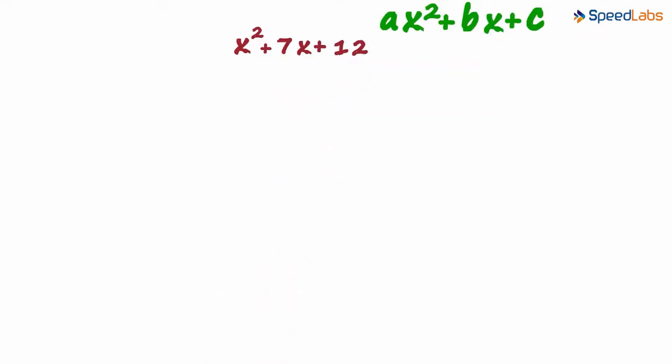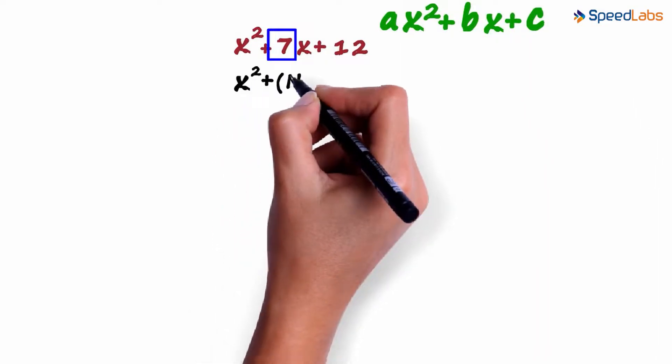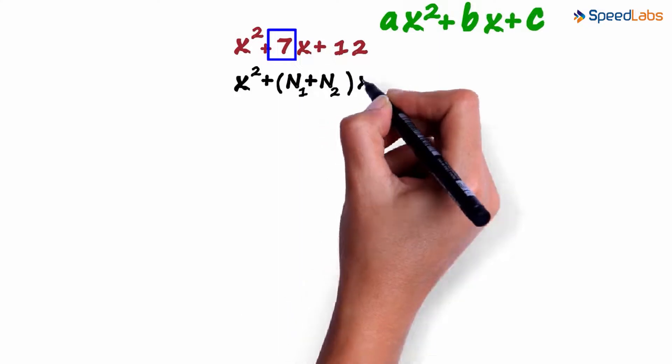Since we cannot use any identity to factorize this polynomial, let us try to split the coefficient of the middle term. We can write it as x squared plus n1 plus n2 x plus 12.